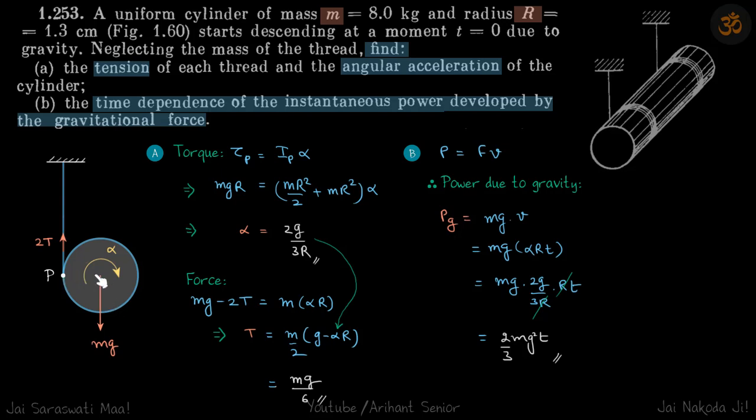So mg·R equals I about point P, that is mR²/2 plus mR² into alpha. This gives the value of alpha.